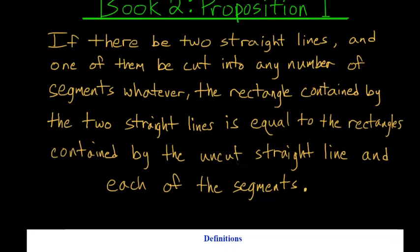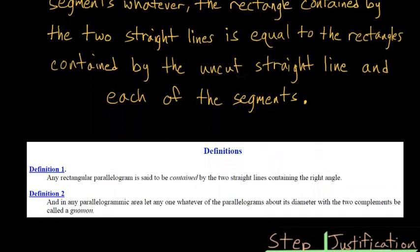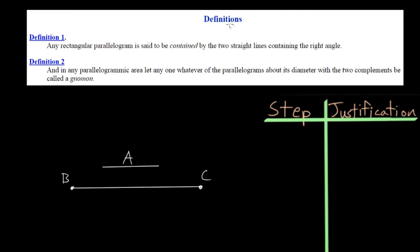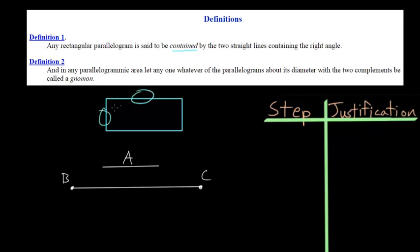Since we're starting the second book of Euclid's Elements, he gives us a couple more definitions — and we've actually used this first one already. Any rectangular parallelogram is said to be contained by the two straight lines containing the right angle. So if you have a rectangle, and these two lines form a right angle between them, you can say that this rectangle is contained by those two lines.